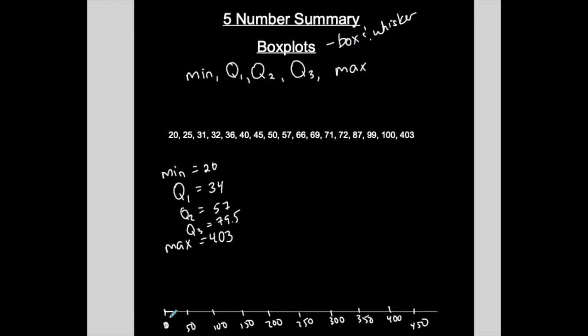So let's start with the box. The box starts at Q1. Q1 is the start of your box for your box and whisker plot. Let me do it in red. So at 34, so approximately here.